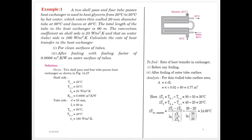Now we will see the first problem. A two shell pass and four tube passes heat exchanger is used to heat glycerin from 20°C to 50°C by hot water, which enters thin-walled 20 mm diameter tubes at 80°C and leaves at 40°C. The total length of the tube in the heat exchanger is 60 meters. The convection coefficient on shell side is 25 W/m²K and on water side is 160 W/m²K. Calculate the rate of heat transfer, considering and without considering the fouling factor.